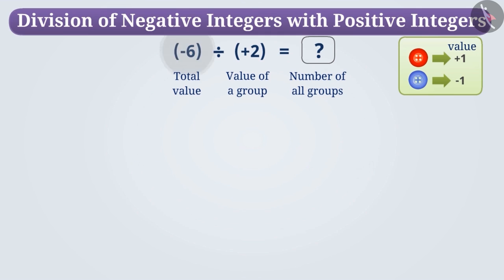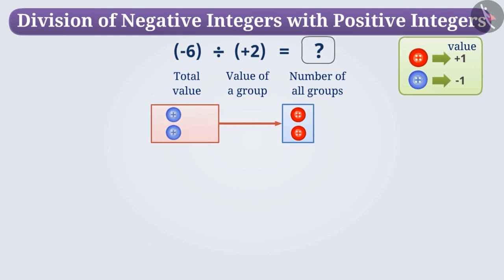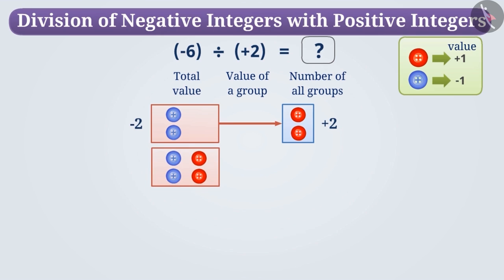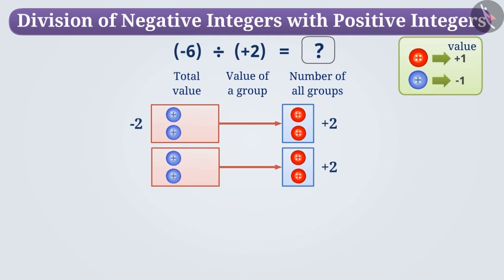To get the value of minus 6, we will first take two zero pairs. If we remove two red buttons from these two zero pairs, we get two blue buttons. In this way, we get a total value of minus 2 by subtracting the value of plus 2 from the zero pair. Similarly, if we take two more zero pairs and subtract the value of two red buttons, that is plus 2, then we get two more blue buttons whose value is minus 2.